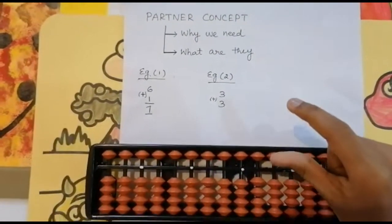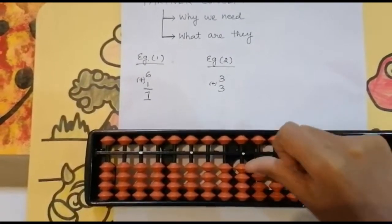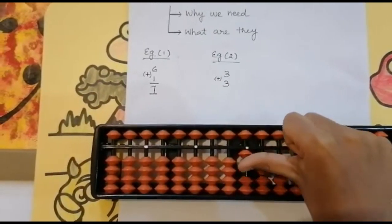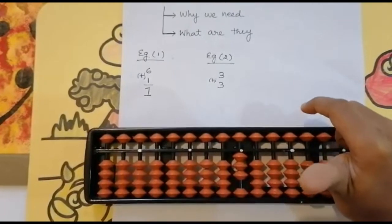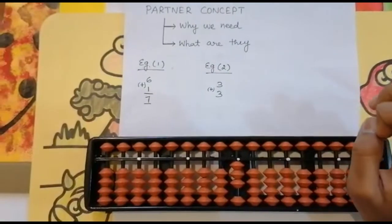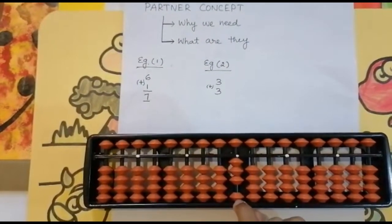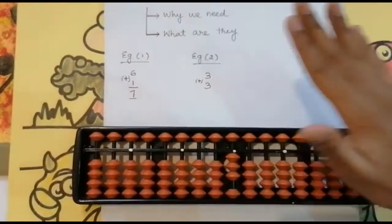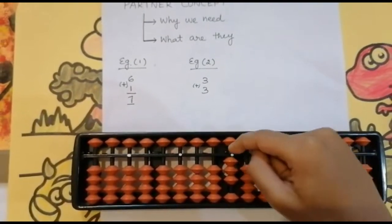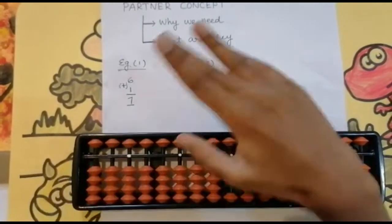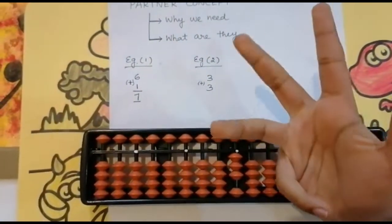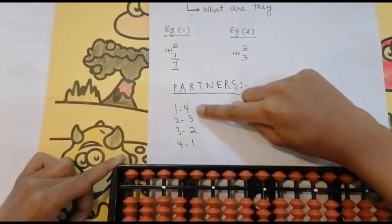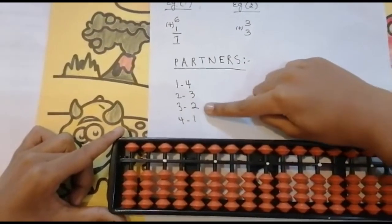In example two, we need to add three beads. Go to the units rod — look below. Is it enough? Yes, enough. Use your thumb finger: one, two, three. Now I need to add three more beads — is it possible? Not possible, because I have only one bead and I need to add three beads. Can I use the upper bead? No, because the upper bead has a value of five, but I need to add three. So now the partner concept comes.